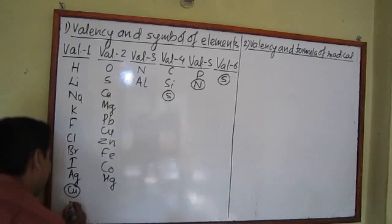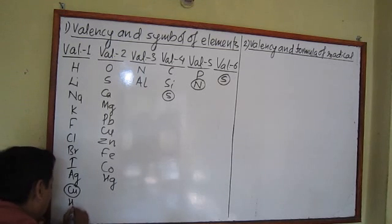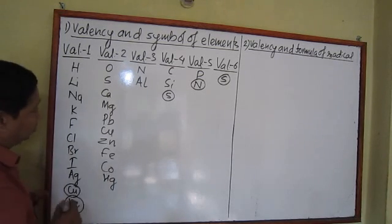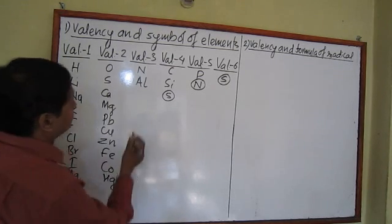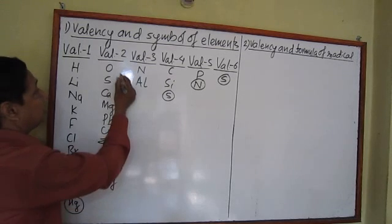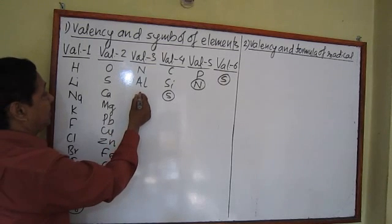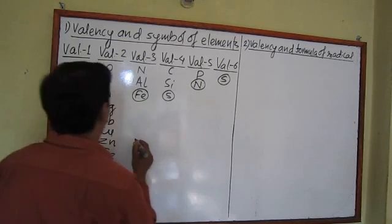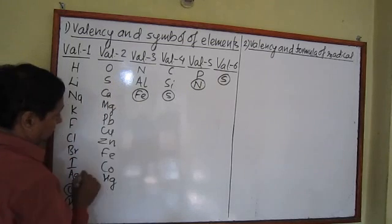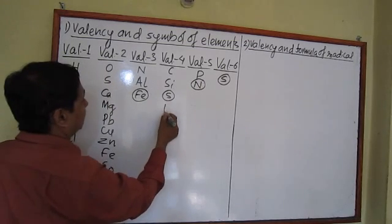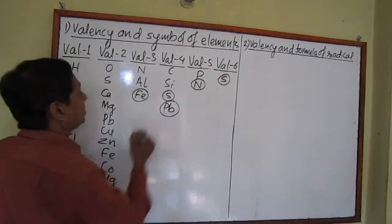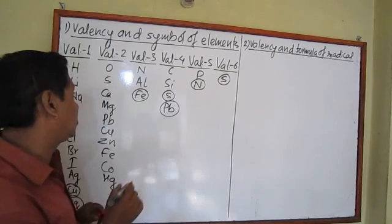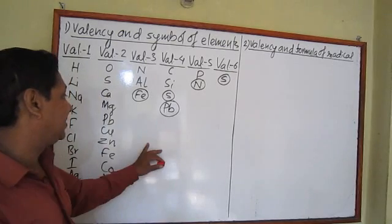Mercury also has valency one in some cases, but normally copper and mercury have valency two. Iron has valency two but sometimes valency three. Lead normally has valency two but sometimes valency four. This is the concept of variable valency.